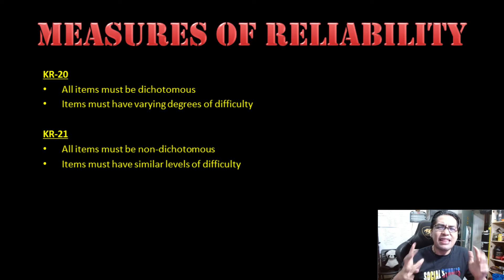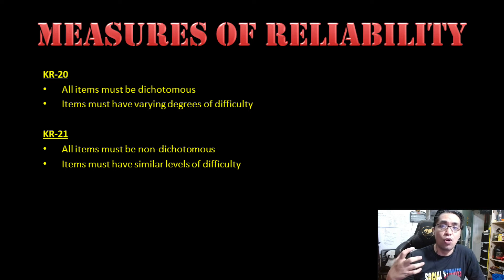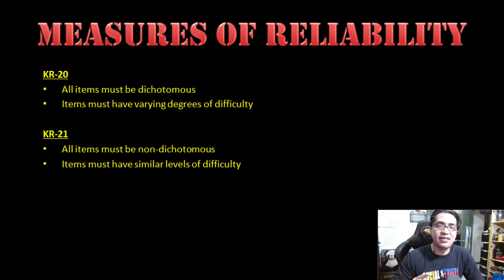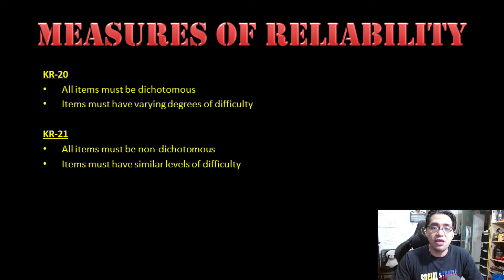Please note that KR20 and KR21 only work when the items of the test are dichotomous — meaning items are either correct or wrong with no varying degrees of correctness. KR20 works best if items have different levels of difficulty, meaning some are easy, some moderate, and some difficult. If the test has items with more or less the same level of difficulty, then KR21 works best.